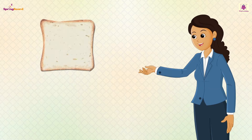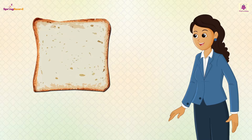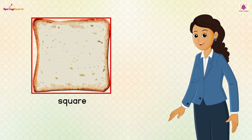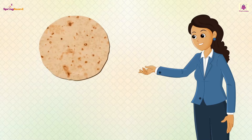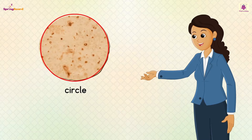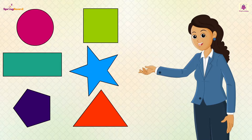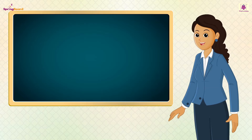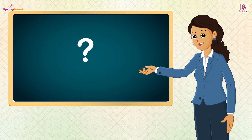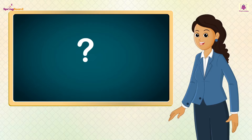Shapes — have you ever seen sliced bread? It is square in shape, and a chapati is circle in shape. There are shapes everywhere. Can you see the blackboard? Which shape is it in? Let's learn a little more about shapes.